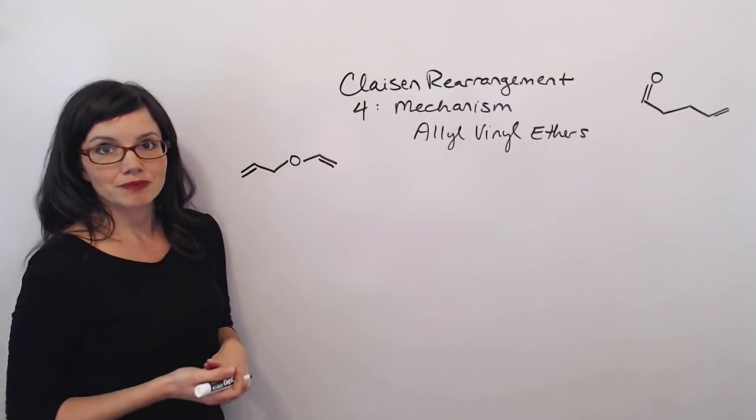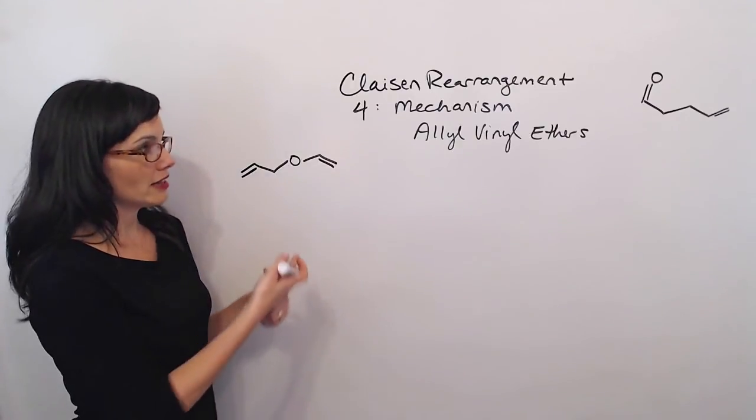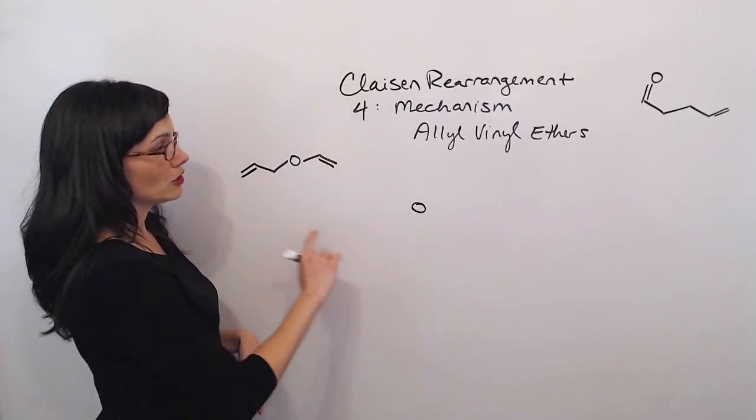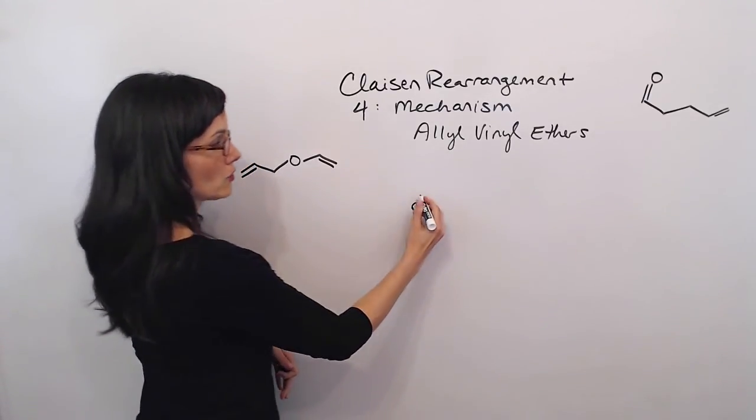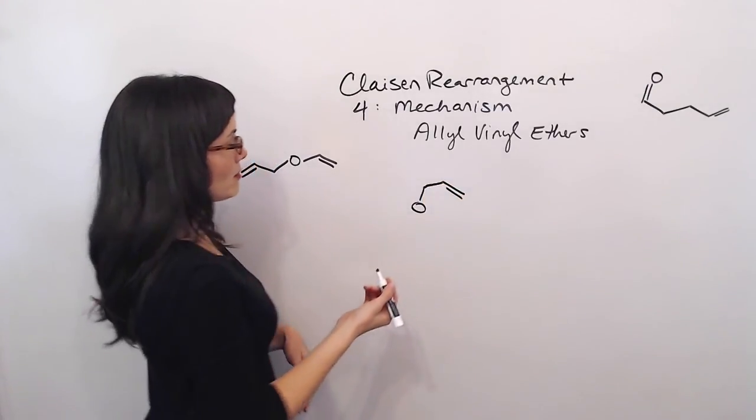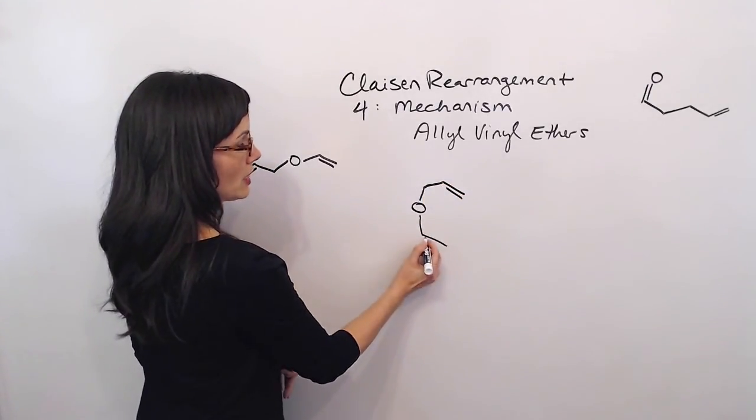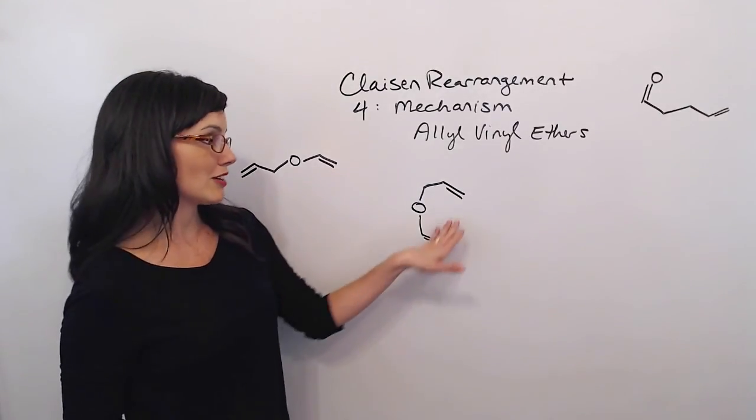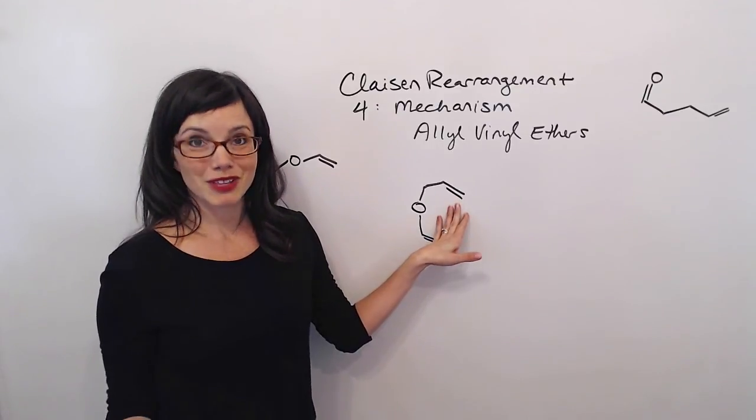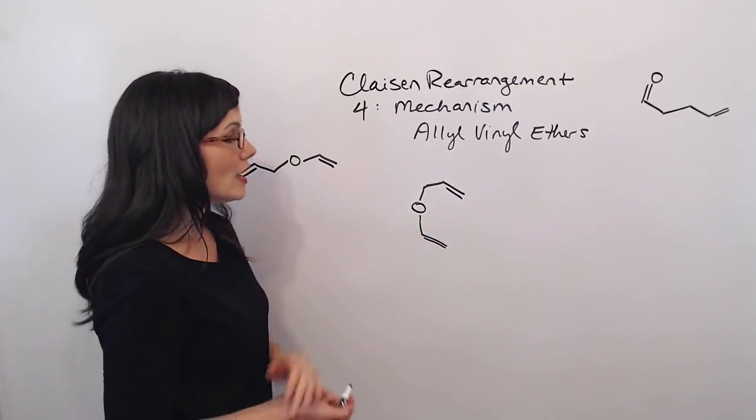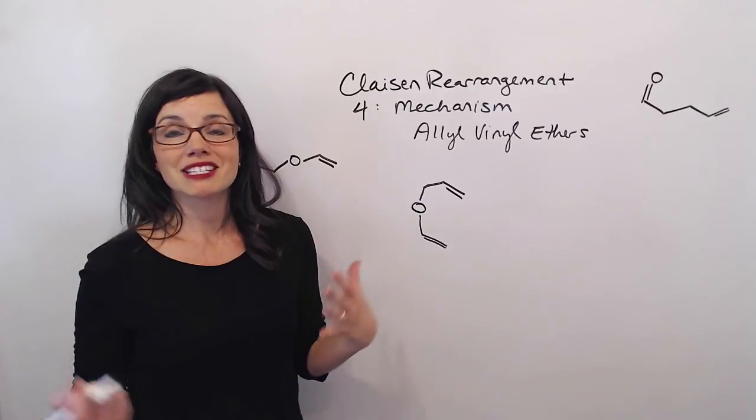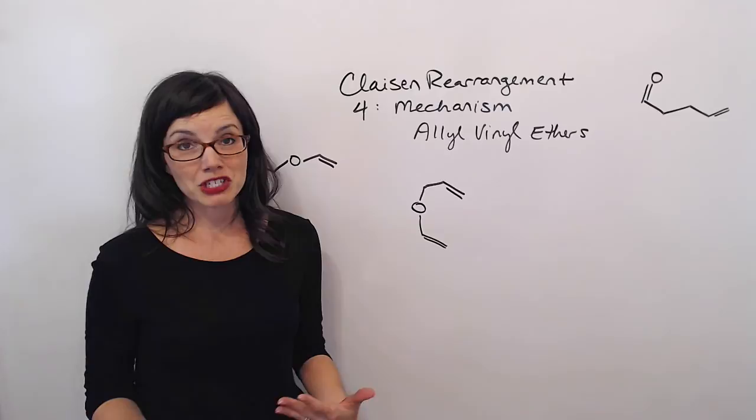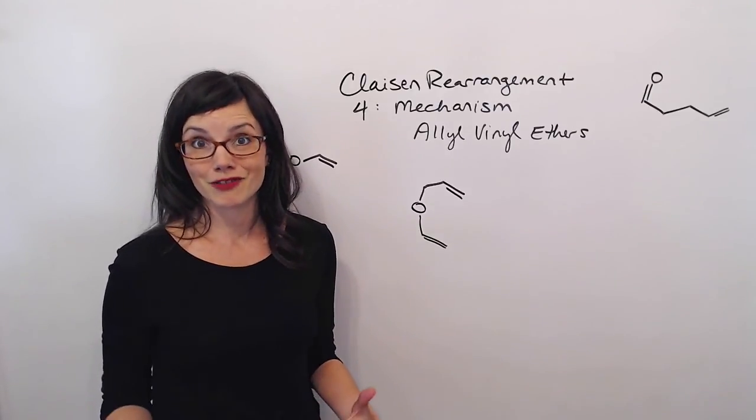If I want to do this mechanism, the first thing that I want to do is set this up in a consistent way and that's going to be putting my allyl group up and then bending over to the right, and my vinyl group down and also to the right, because this carbon-carbon double bond of the vinyl group is going to be interacting with the carbon-carbon double bond of the allyl group. The first step of this mechanism is identical to the first step of the allyl phenyl ethers. If you haven't watched that video, I encourage you to go back and spend time there first.